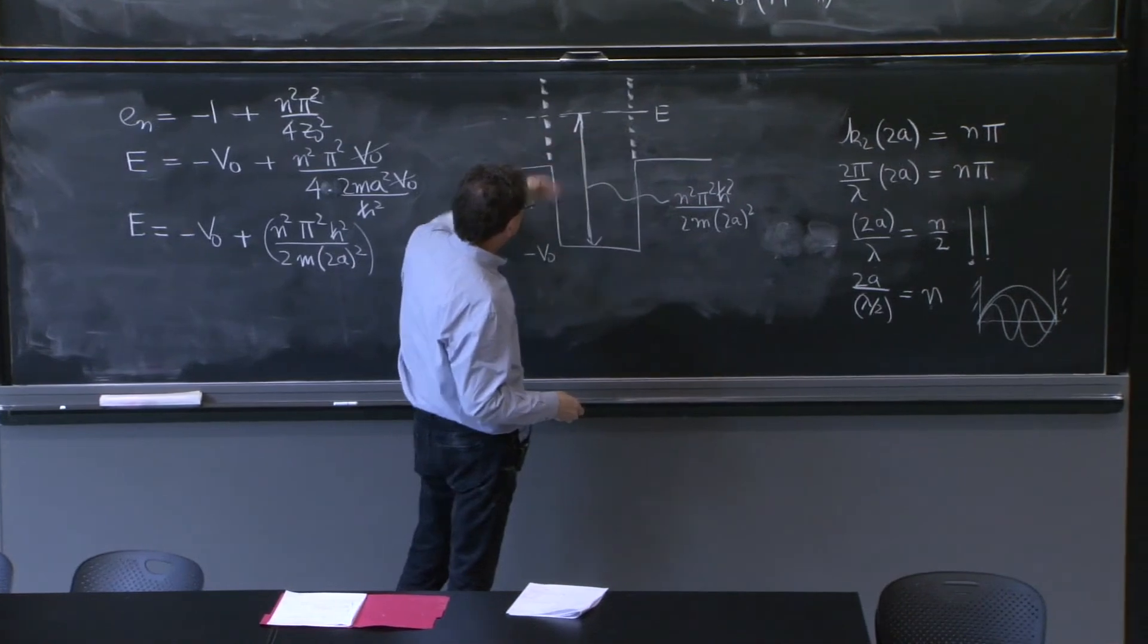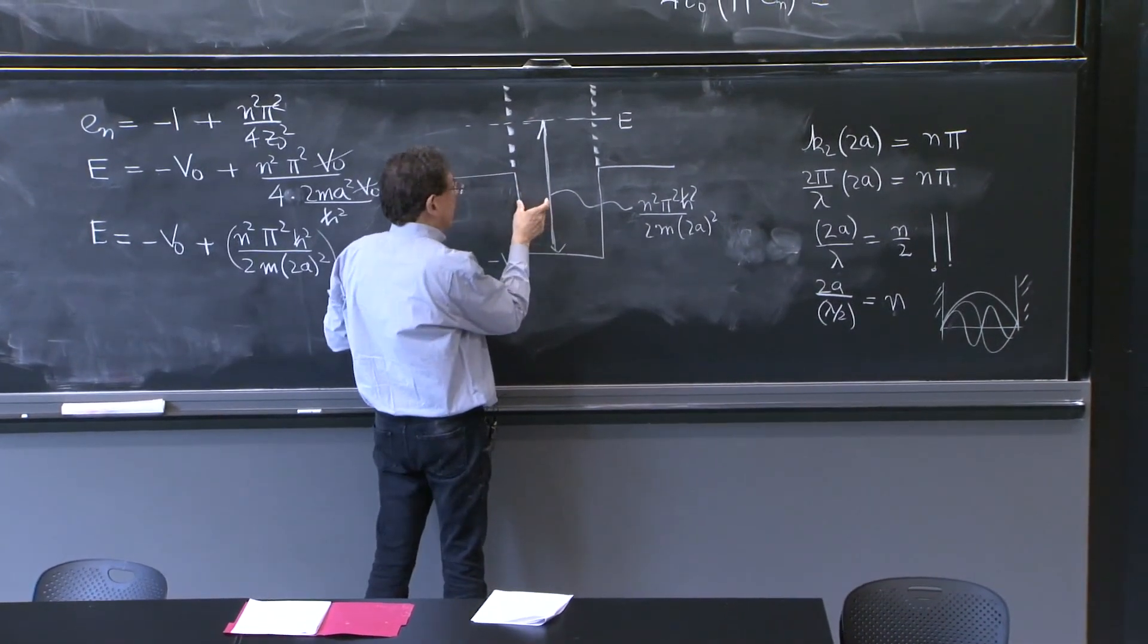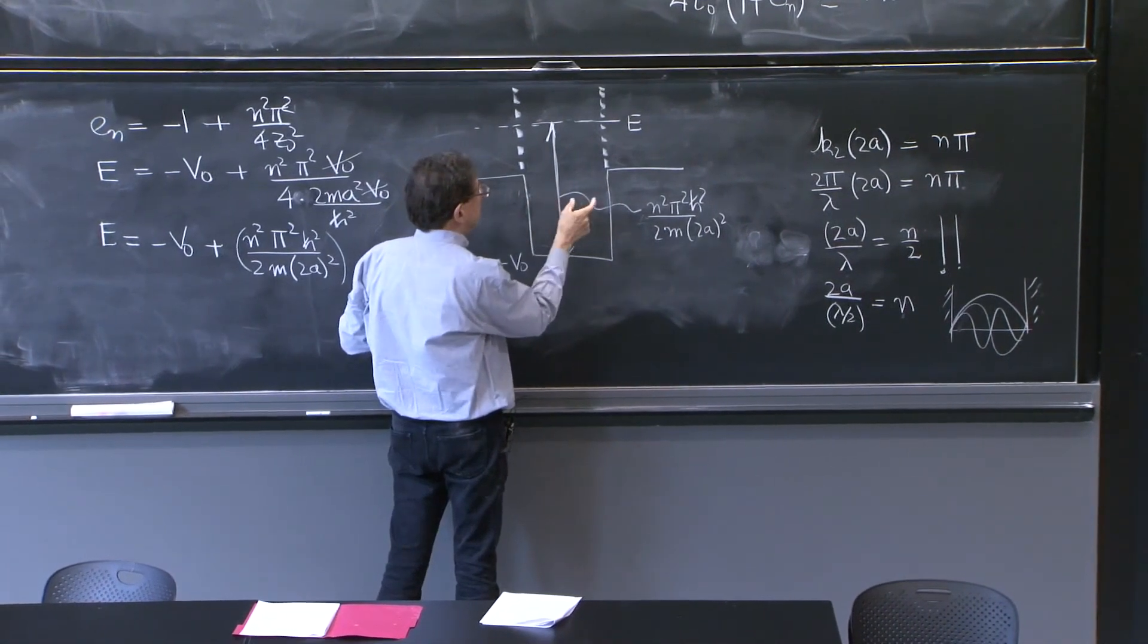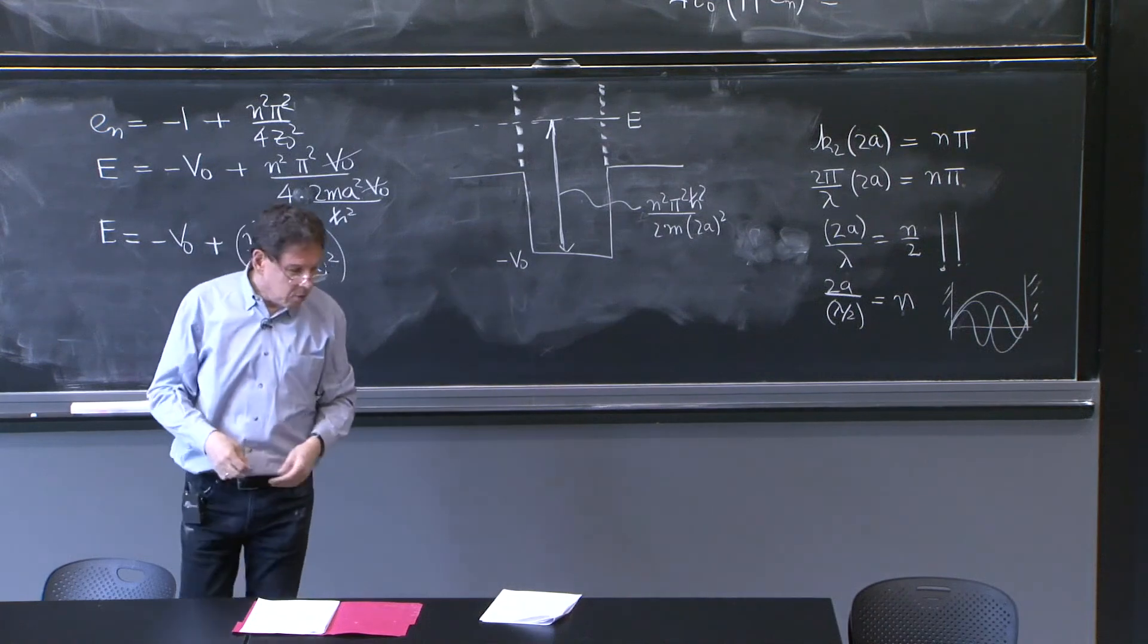So the infinite square well appears just as a way to think of what are the energies at which you will observe the resonances. But the resonance is simply due to having an exact number of half waves in this region. So we can do a little numerical example to show how that works.